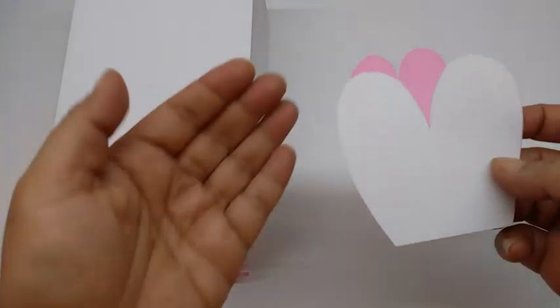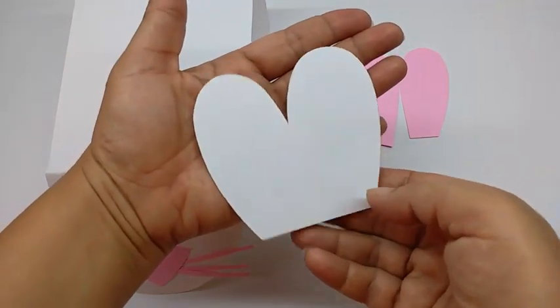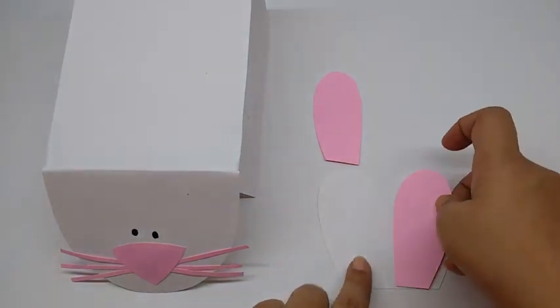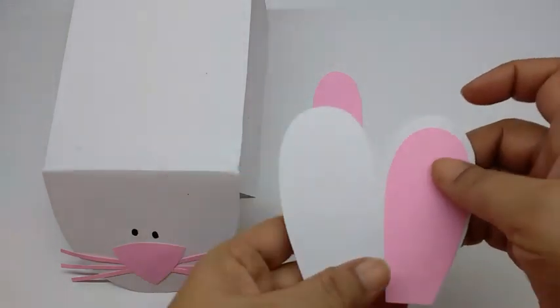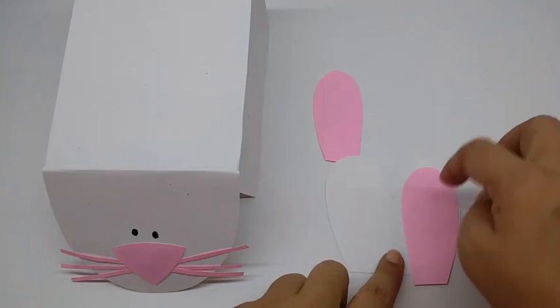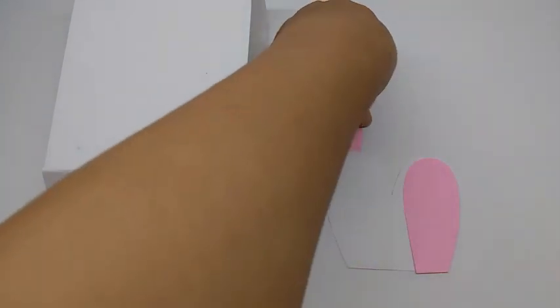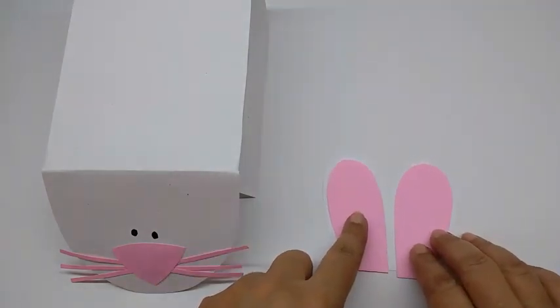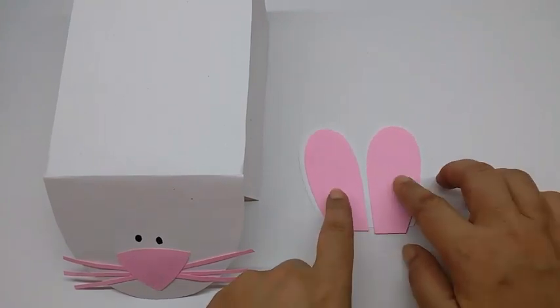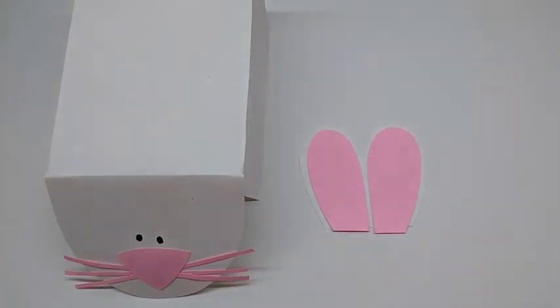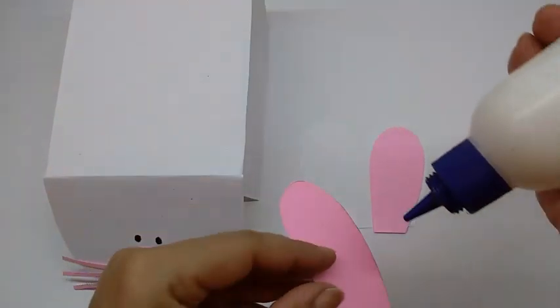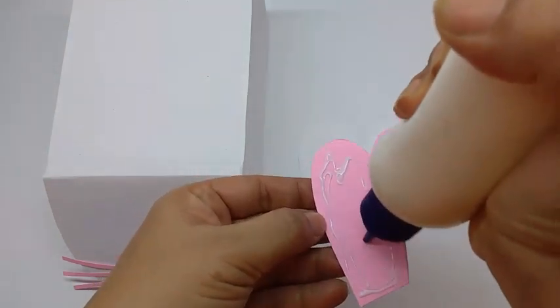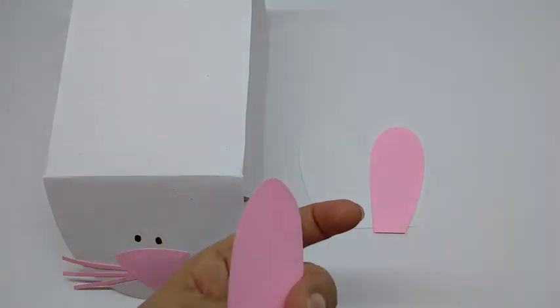I have cut out the shape already from the white paper. And these are two pink shapes that I have cut, which are basically fitting inside the ear like this. So I will just stick both of them on it. So first just place them. They will come like this.